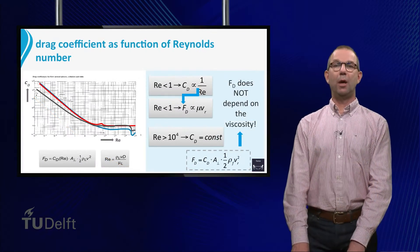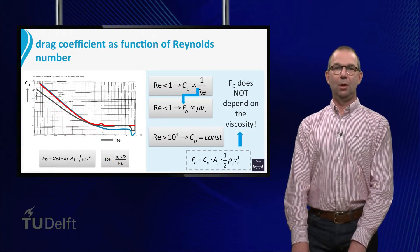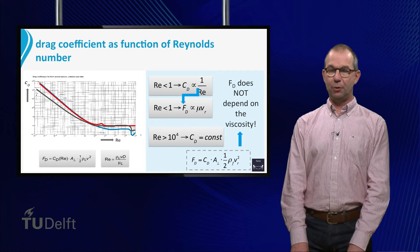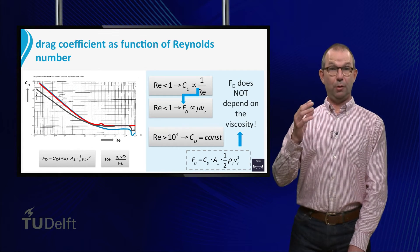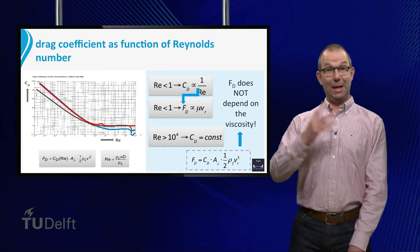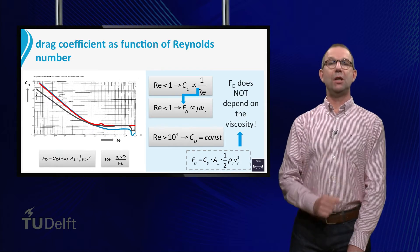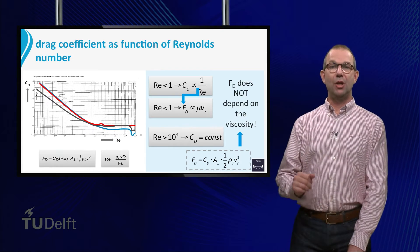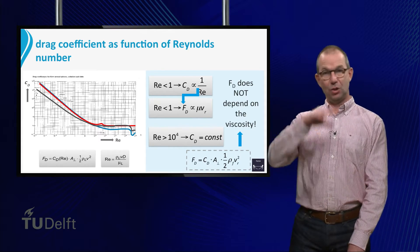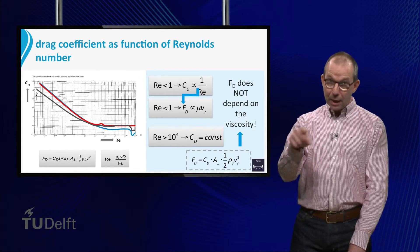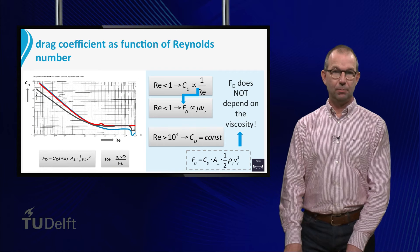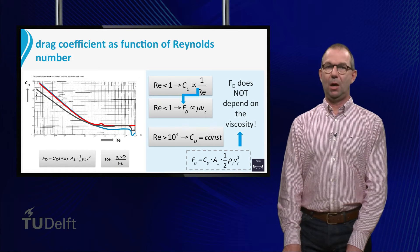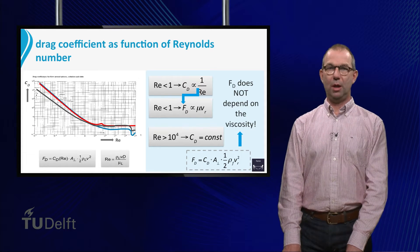For high Reynolds numbers, the flow around the object is turbulent. Transfer of momentum — and that is what the drag force is — is done by all eddies, big and small, present in the flow. Viscous effects are no longer important for the drag.